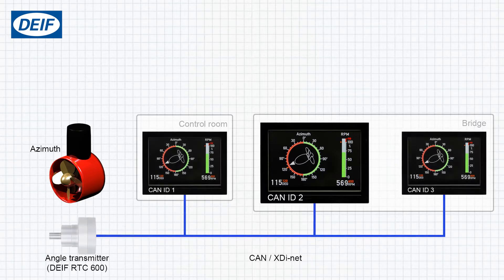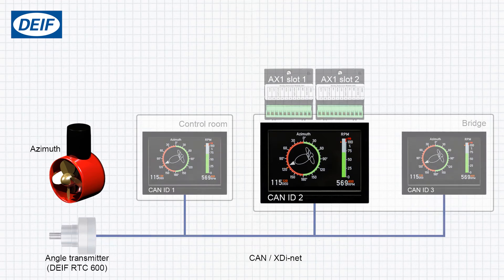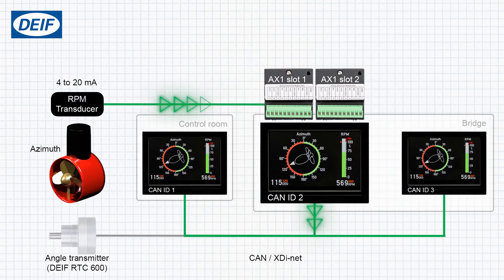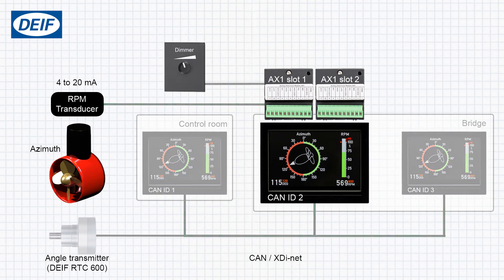A CAN transmitter is mounted on the azimuth and the value is transmitted via CAN bus to all the XDIs. The XDI has two analog AX1 modules fitted. An RPM transducer is connected to the first analog module, and the XDI transmits the RPM data to all the other XDIs over XDInet.